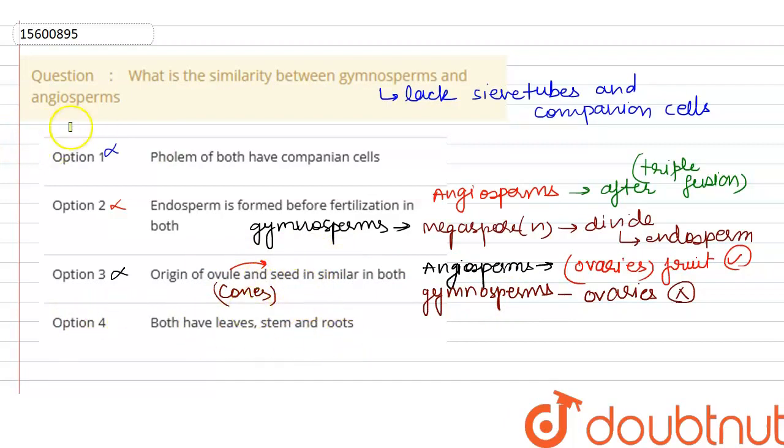Last option, both have leaves, stem and roots which is correct. Both of the gymnosperms and angiosperms have leaves, stem and roots present which is the right answer.